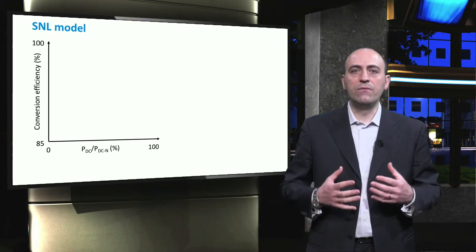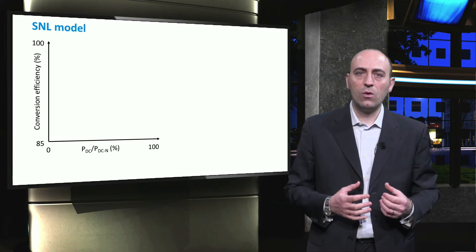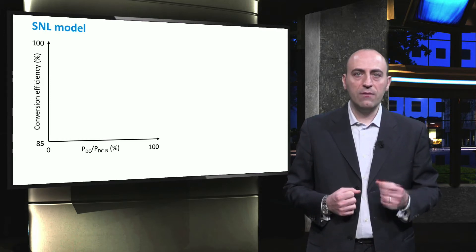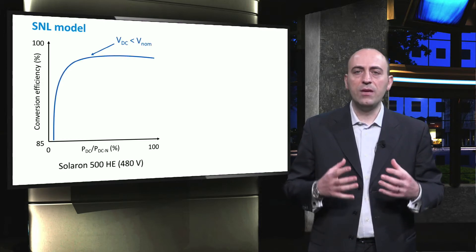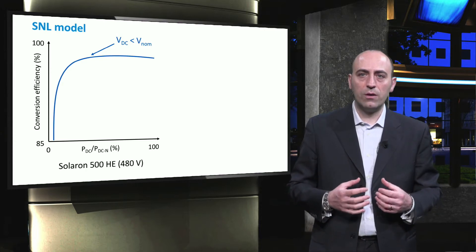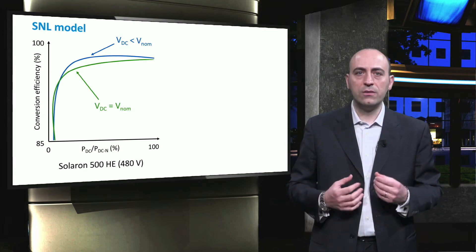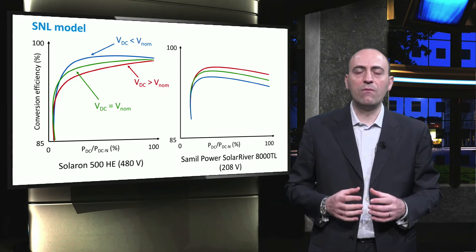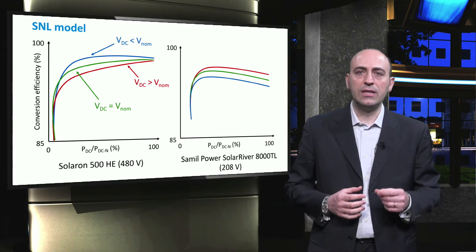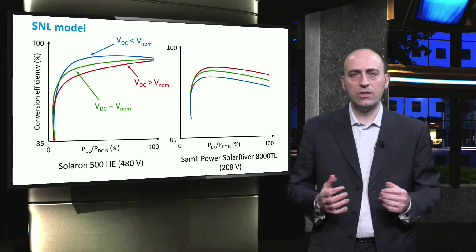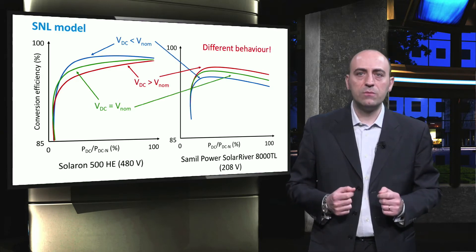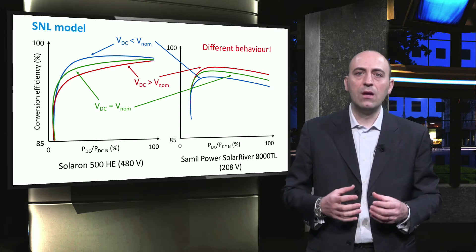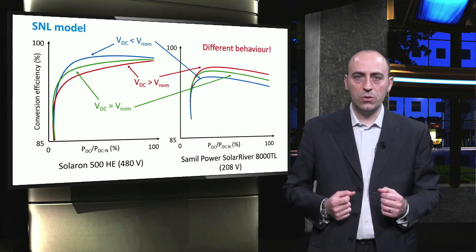The dependency of the inverter efficiency on the DC input voltage is a very complex phenomenon. For a given inverter, there is a different behavior when the DC voltage is lower, equal, or higher than the nominal voltage of the inverter. Nevertheless, for a different type of inverter, a higher voltage can lead to higher efficiencies, or vice versa. The differences between different inverter types can partially be explained by the different types of switches used.